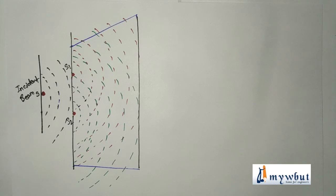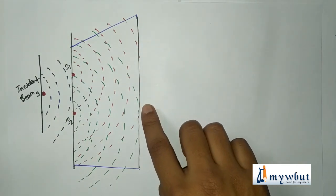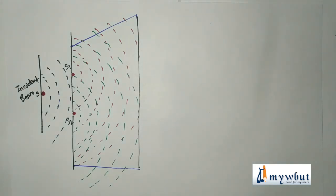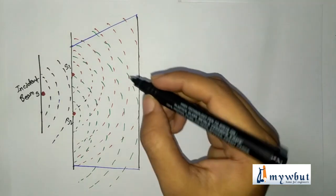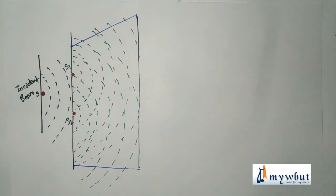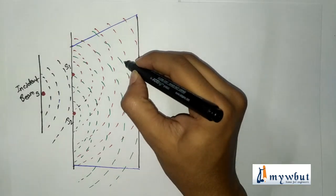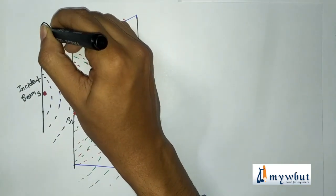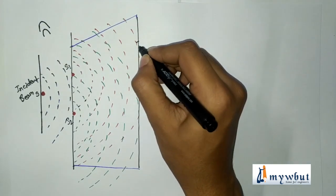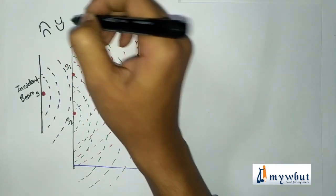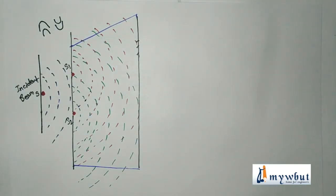The wavefronts from S1 and S2 superimpose on the screen. At points where a crest due to one wave meets a crest due to the other, bright fringes are formed. Where two troughs meet, dark fringes are formed. That is how we observe the bright and dark fringes on the screen.